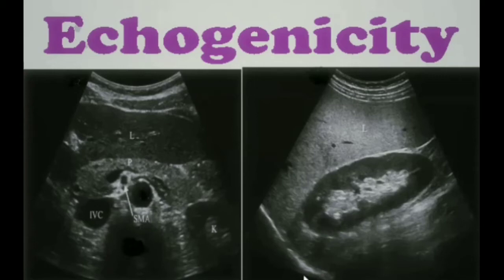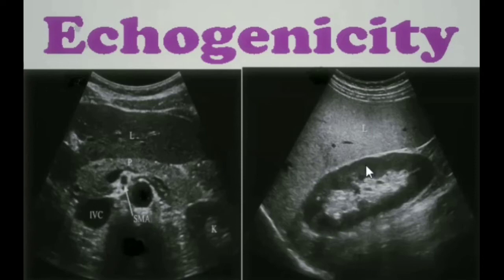For example, in this image we can see the diaphragm. The diaphragm is echogenic as compared to its neighbor, the liver. At the same time, if we compare the liver with the renal cortex, the cortex is hypoechoic to its neighbor which is once again the liver, while we can also explain it that the liver is hyperechoic as compared to the renal cortex.